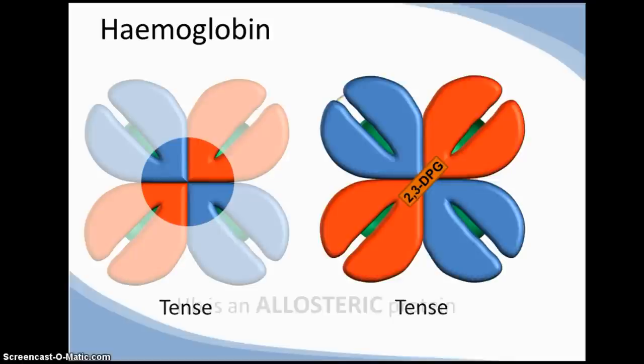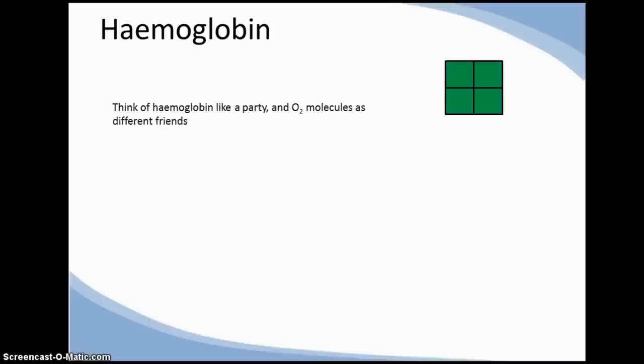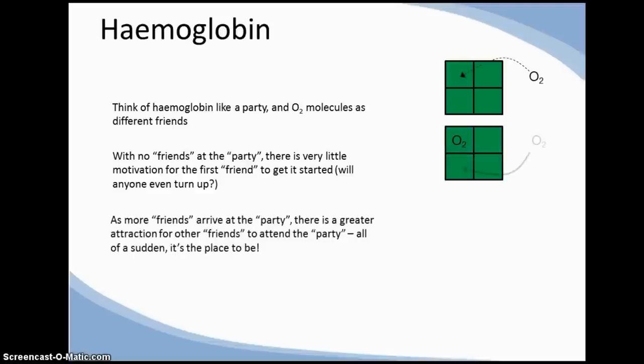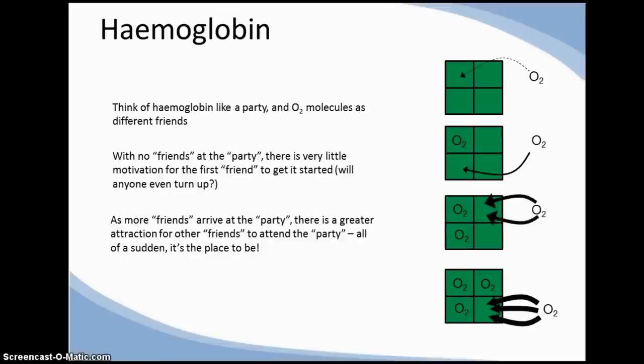Proteins that modify their shape depending on what is bound or unbound can be referred to as allosteric. A really simple way to think of this concept is to consider haemoglobin as a party and oxygen molecules as groups of friends. With no one at the party, there's very little incentive, or a low affinity, for the first person to attend, but eventually someone will. As the party gets busier, all of a sudden it's the place to be and people are coming from far and wide. The party fills up fast. This phenomenon is called cooperativity.